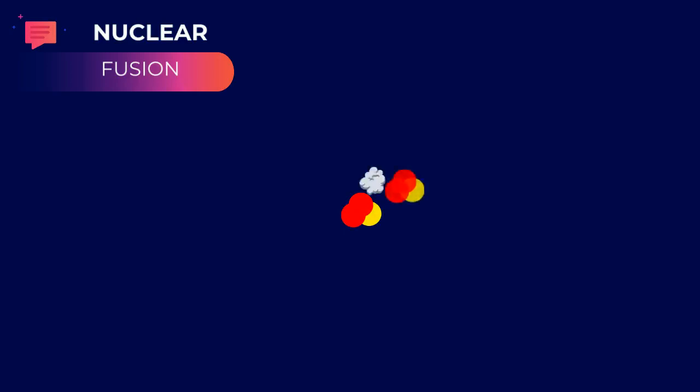Then, helium-3 collides with another helium-3, mostly formed by the same process described here, and finally forming a normal helium atom and releasing two protons.